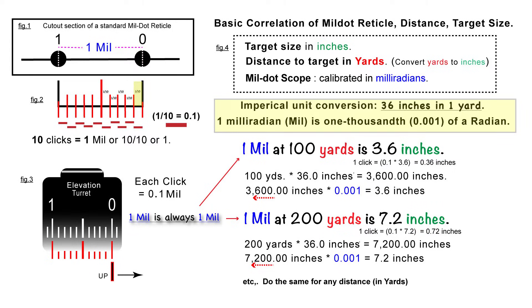Now we're going to put it all together. We're going to talk about the target in inches, distance to the target in yards, and we're going to talk about what we've learned so far: the milliradians and how we apply the milliradians to the reticle on the scope and also the elevation turret on our scope.